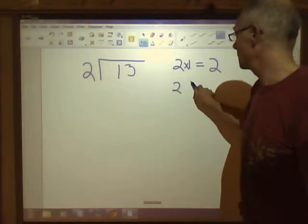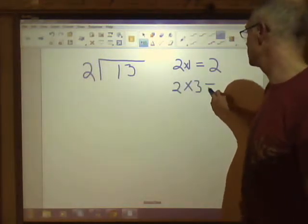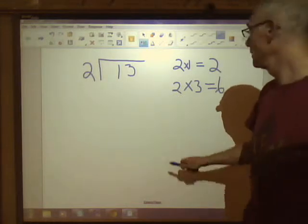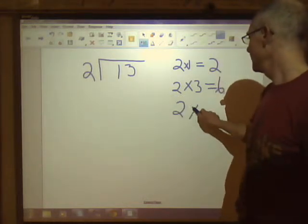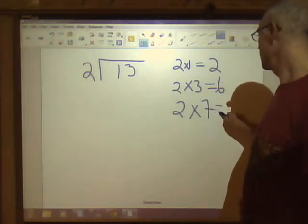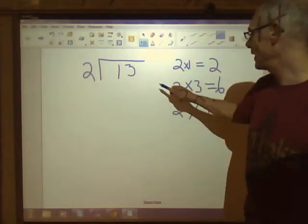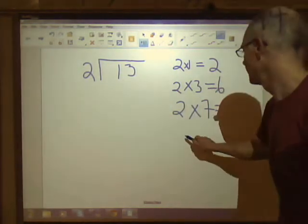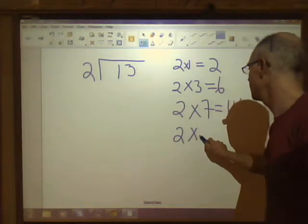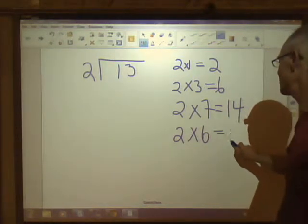If each person gets $3, then we would use six of our dollars. If each person gets $7, then we'd use $14. We don't have $14. So each person must get $6.